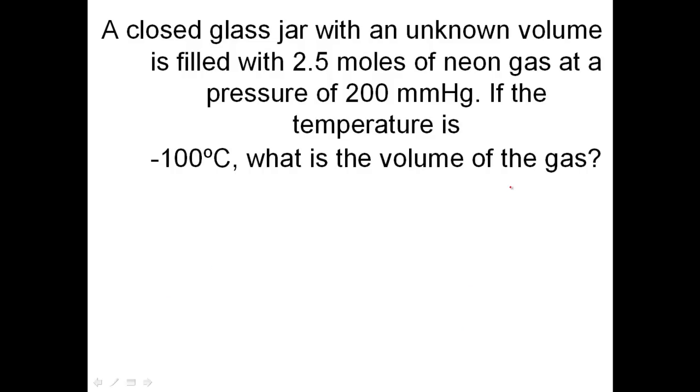Let's go on to our next problem. Let's check out what kind of formula we're going to use. A closed glass jar with an unknown volume is filled to 2.5 moles. Right away, I've been given moles, so I need to use PV equals NRT. The pressure is 200 millimeters of mercury. The temperature is negative 100 Celsius. The question is, what is the new volume? I have one pressure, one temperature, and one volume, so we're going to be using the PV equals NRT formula.